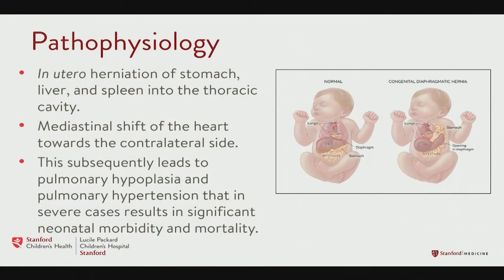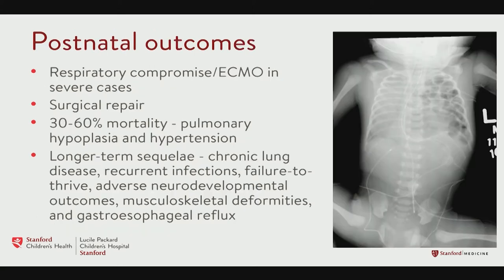The pathophysiology is well known. The major outcome of having the viscera herniate into the fetal thorax is a disruption of the alveoli leading to pulmonary hypoplasia, and then the vasculature leading to pulmonary hypertension. On the neonatal side, there's clearly significant associated morbidity and mortality. The mortality ranges depending on the size of the defect, where it's located, and associated syndromes. And even in survivors, we encounter long-term problems that can even lead to mortality later on in life.